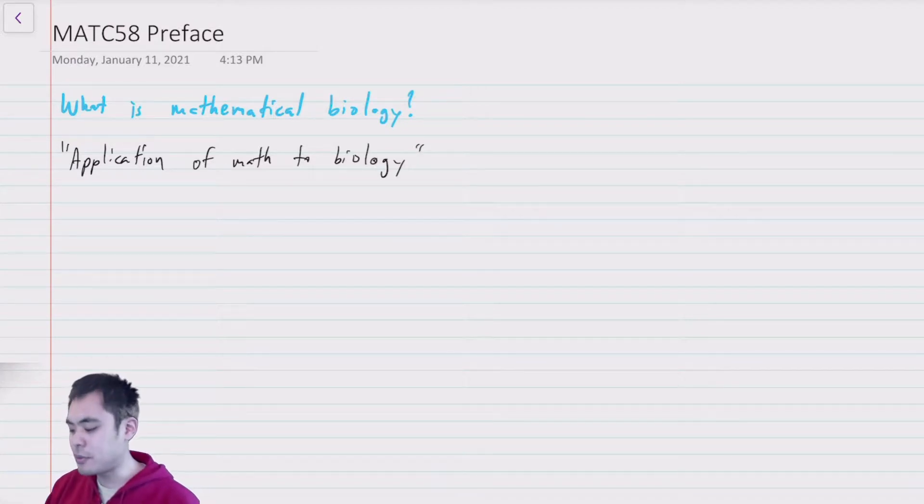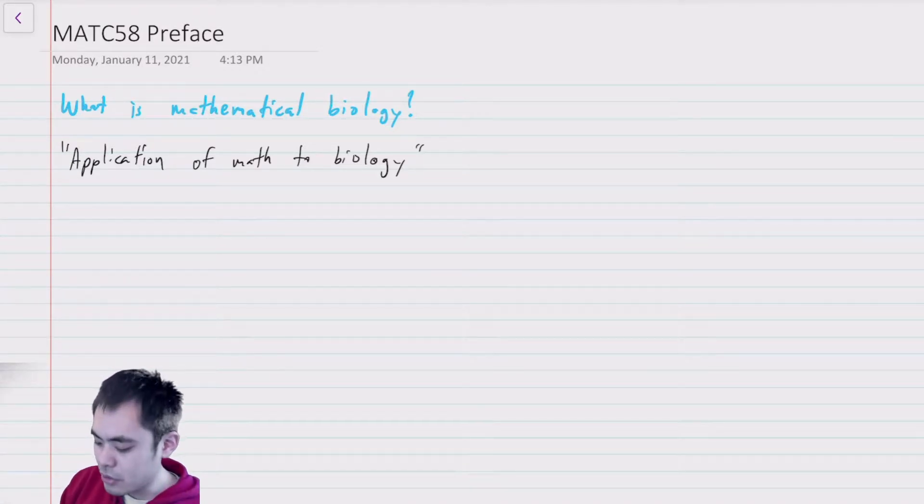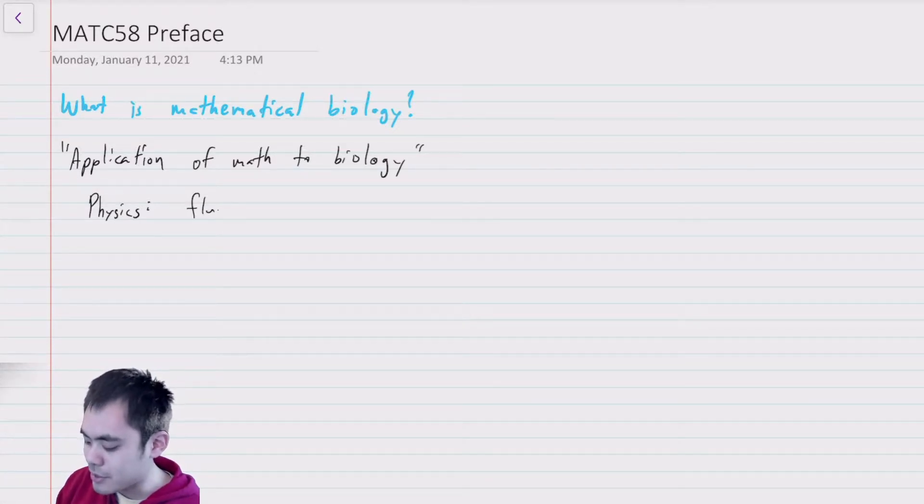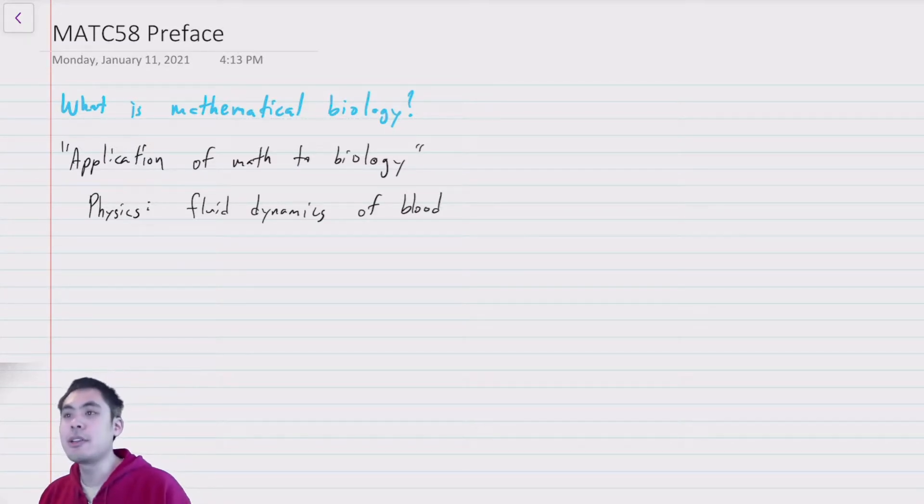It's not a very informative answer because mathematical biology is often mediated through other fields. It defies easy classification. For example, there are obvious examples where we apply physics to biology. If you have the fluid dynamics of blood, that's clearly an example where you're using our knowledge of physics to model a biological system.